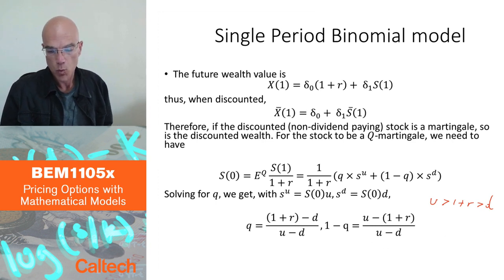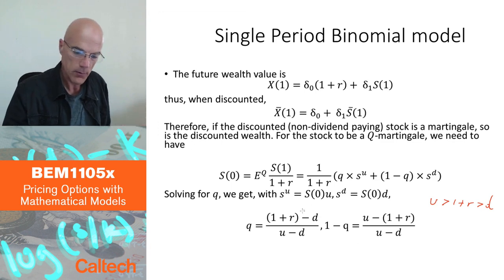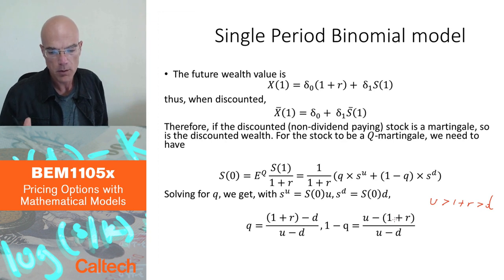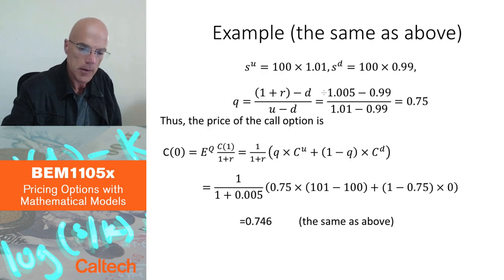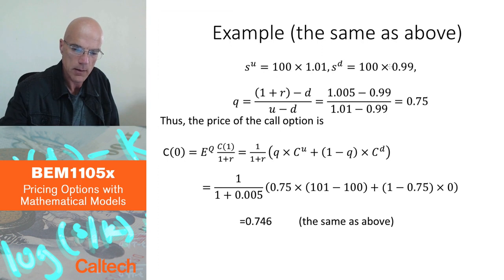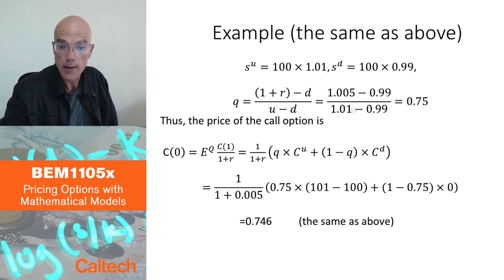All right. So we had a general formula for any model. Now we have that formula for the binomial model, single-period binomial model. Let's use it in the same example we did before. If you remember the example, the up value was 101, the down value was 99, which means U is 1.01, and D is 0.99. So I can compute my Q. R was 0.05, so 1.05 minus 0.99, 1.01 minus 0.99. You compute that, you get 0.75. This happens to be close to the price of the option, 0.74 something, but that's just by chance, by coincidence. So 0.75 is the risk-neutral pricing probability of this option.